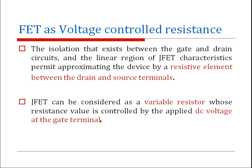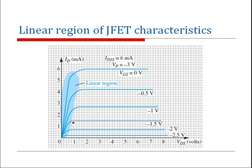Now let us see the application of FET as a voltage controlled resistance. The isolation between the gate and drain circuits and the linear region of the JFET characteristics permit the approximation of the device as a resistive element between drain and source terminals. The JFET is considered as a variable resistance whose resistance is controlled by the applied DC voltage VGS at the gate terminal, in the ohmic or linear region of the characteristics.